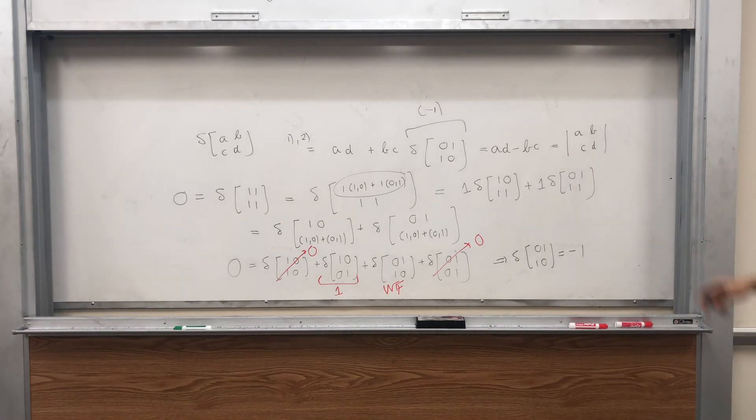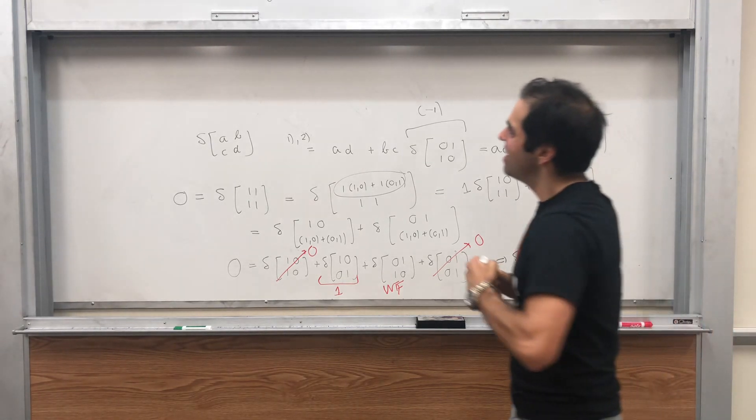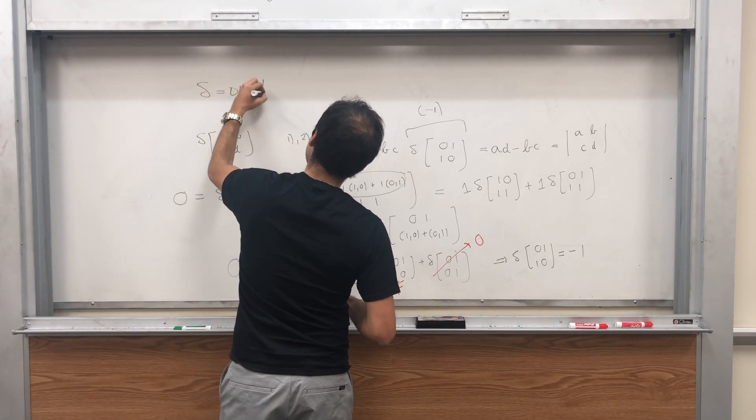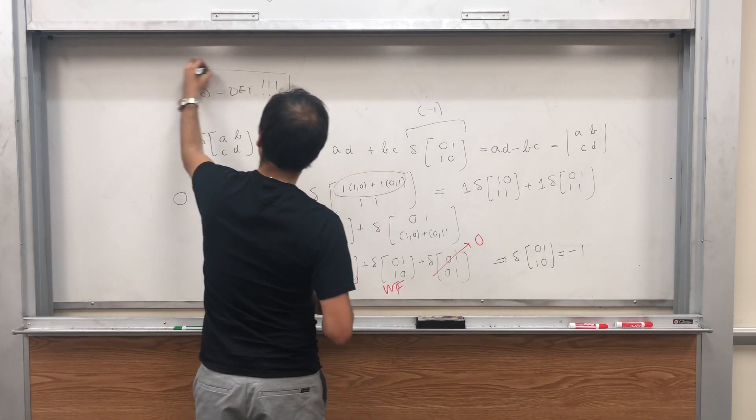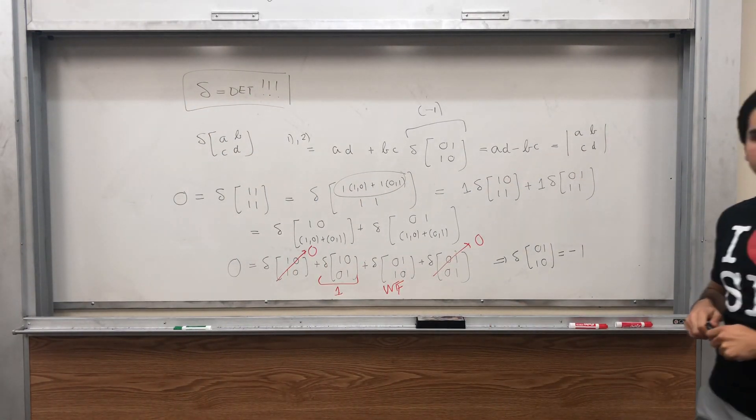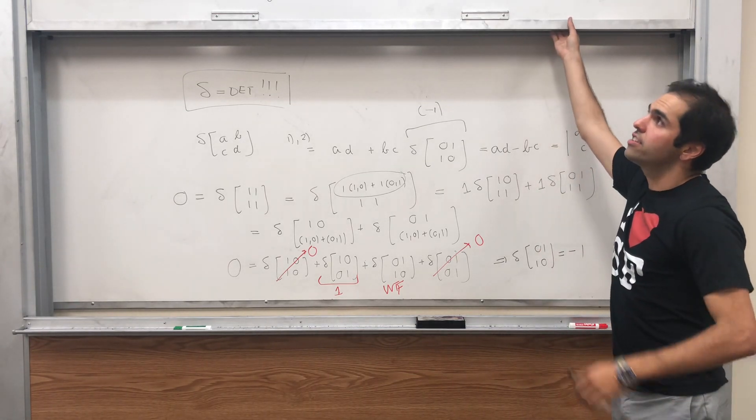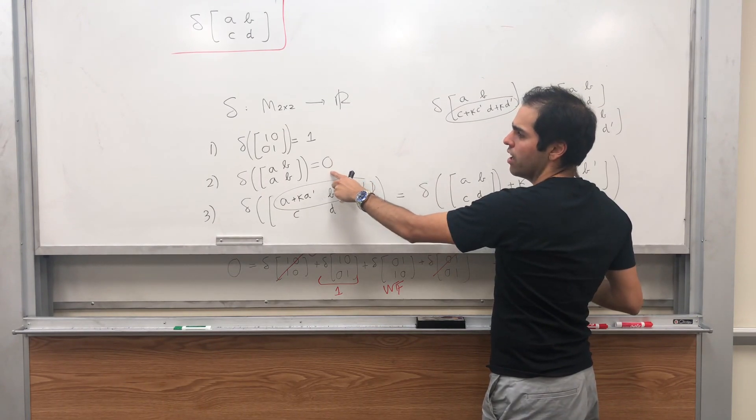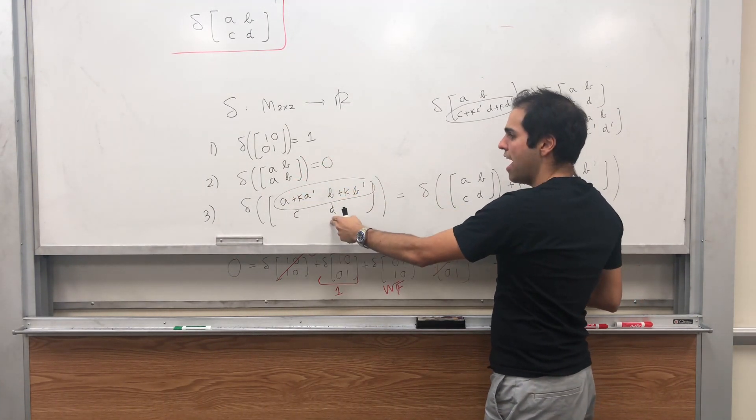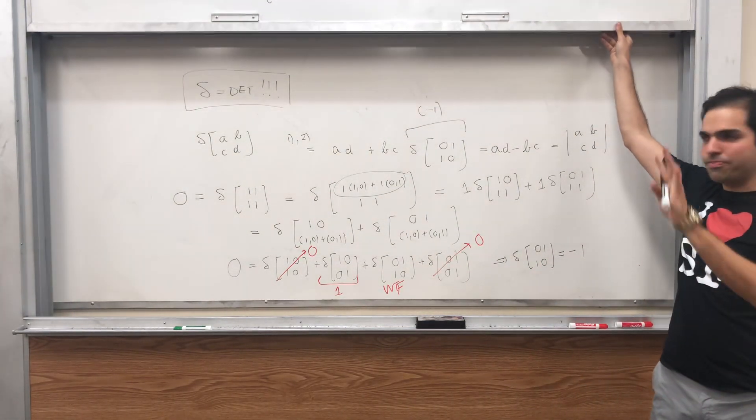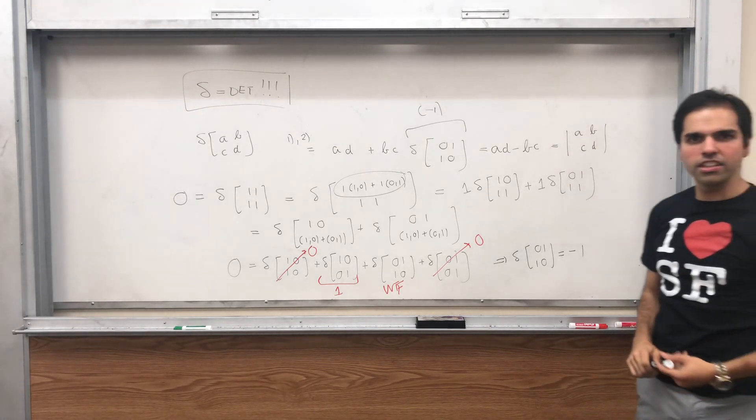So delta of ABCD is the determinant of ABCD. Who am I? What is delta? It's just the determinant. And therefore, we have found a complete characterization of the determinant. It's just any function which is 1 at the identity, which is 0 at equal rows, and which is multilinear. Using just those three properties, we can recover the determinant.